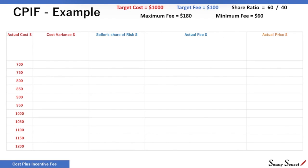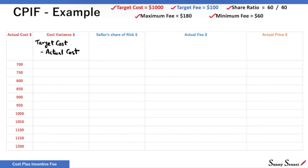We have a CPIF contract with a target cost of $1,000, target fee of $100, share ratio of 60 to 40, maximum fee of $180, and a minimum fee of $60. We will calculate the actual fee and actual price for different values of actual cost. Starting with cost variance — it captures the gap between the estimated and the actual cost, and is given as target cost minus the actual cost. Target cost is $1,000. For actual cost of $700, the cost variance is $1,000 minus $700, or $300. For actual cost of $1,200, the cost variance is minus $200. Let's populate the other cells for cost variance.